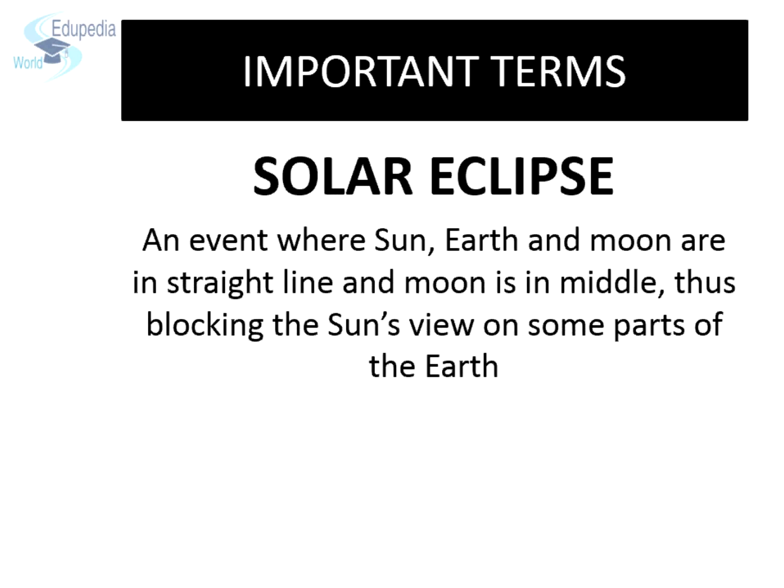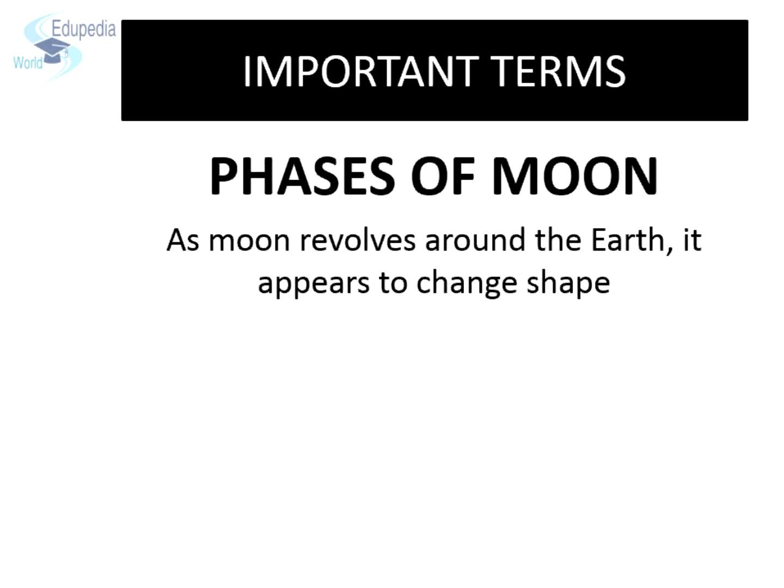Solar eclipse: an event where Sun, Earth and Moon are in a straight line and the moon is in the middle, thus blocking the sun's view on some parts of the Earth. Phases of Moon: as the moon revolves around the Earth, it appears to change shape.